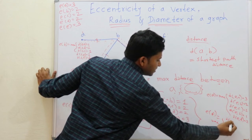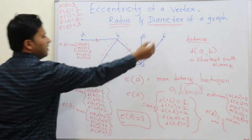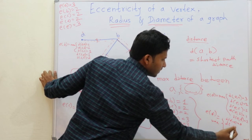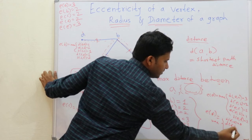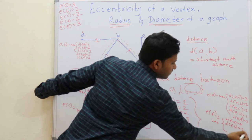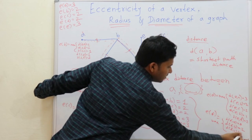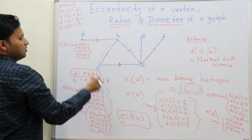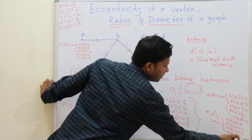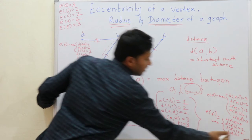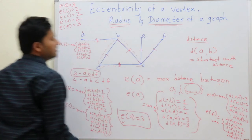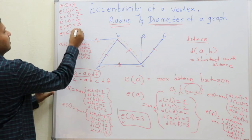Now eccentricity of F. Distance F to A: 1, 2, 3. Distance F to B is 2. Distance F to C is 2. Distance F to D is 1. And F to E is also 1. The maximum is 3, so the eccentricity of F is 3.